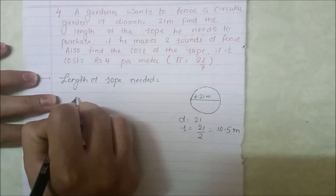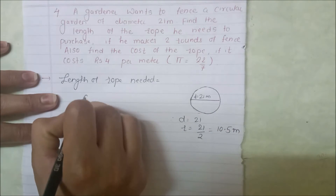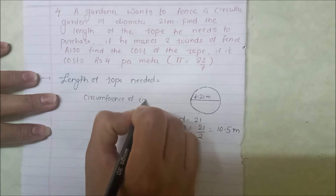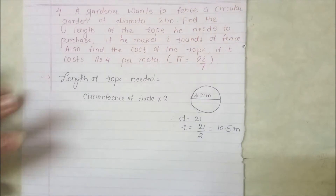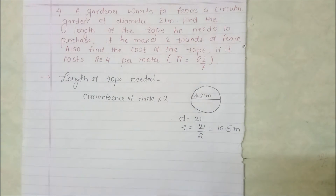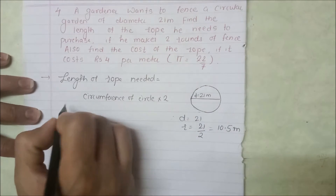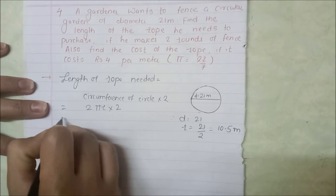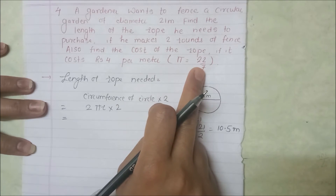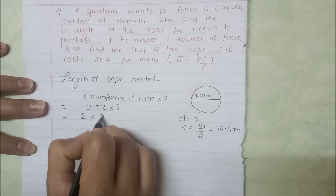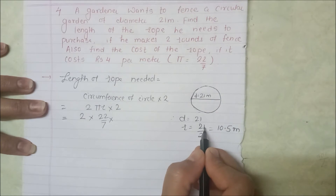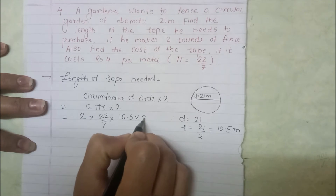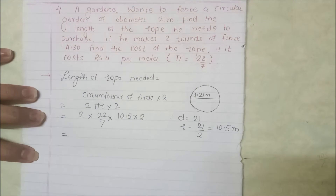Length of rope needed = circumference of circle × 2, क्योंकि दो बार fencing चाहिए — 2 rounds। Circumference = 2πr, so formula becomes: 2 × (22/7) × 10.5 × 2। π की value 22/7 ली और r = 10.5 लिया।